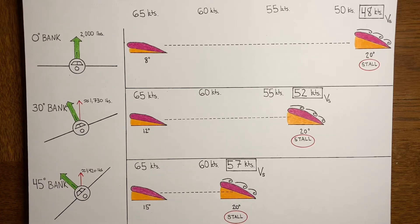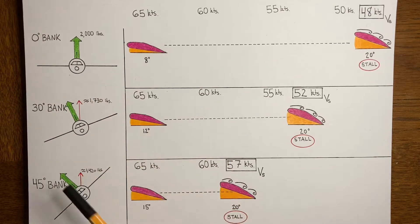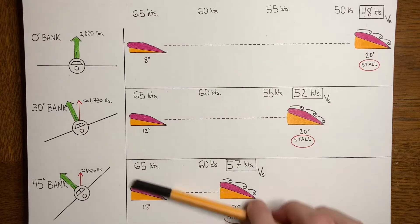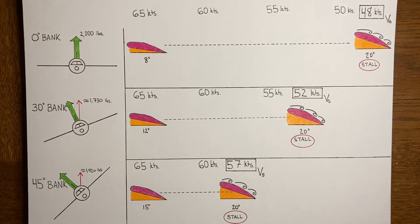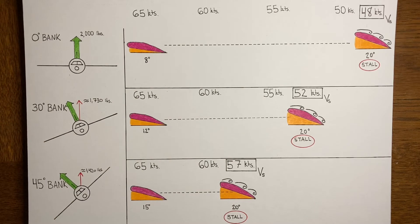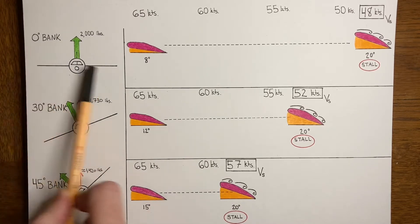Let's assume the airplanes all weigh the same. I've got this green arrow drawn up here that represents the lift vector. Let's assume that the airplanes are all flying at the same speed — say 65 knots — and at that speed, with that much airflow over the wings, they generate 2,000 pounds of lift. That lift acts straight up for the airplane with wings level.